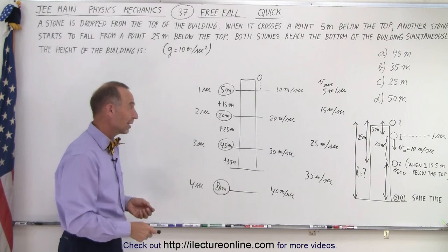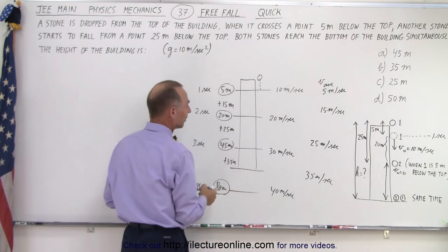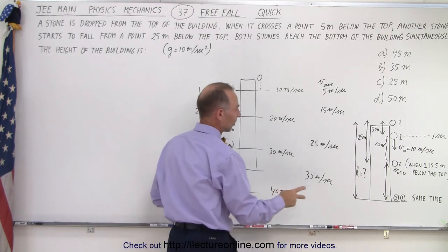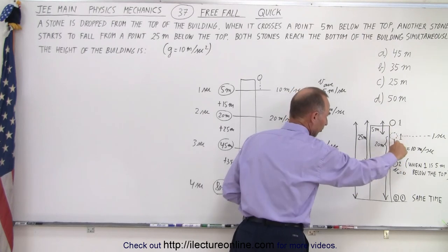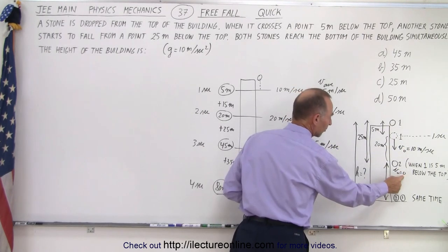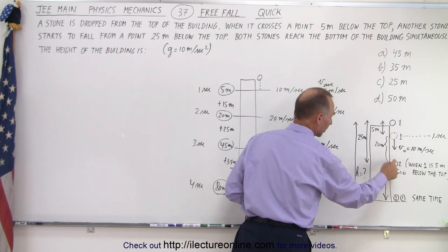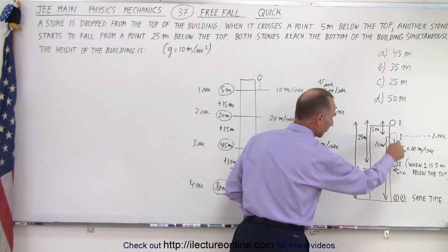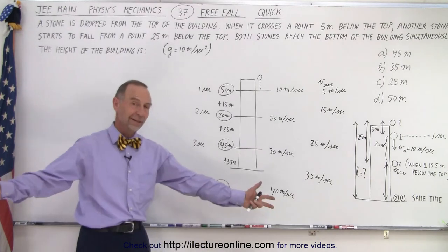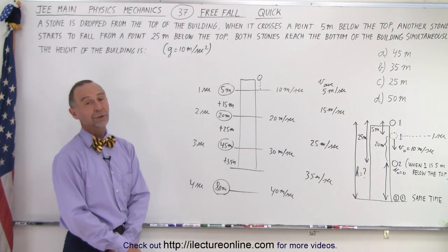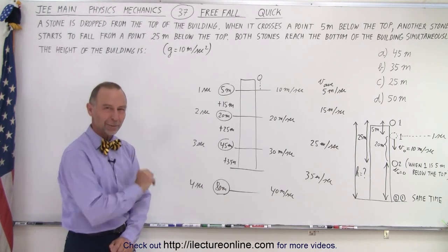So this is actually a quick way — you can very quickly write the numbers down: 5, 15, 25, 35, add them up, realizing that the distance between the two rocks is 20 meters. When the second one is dropped, the first one is already moving at 10 meters per second while the second starts at zero. It takes 2 seconds for rock 1 to catch rock 2, making the total drop time for rock 1 equal to 3 seconds. In 3 seconds it drops a total of 45 meters — that's the height of the building. That's the quick way; you don't have to worry about the equations.